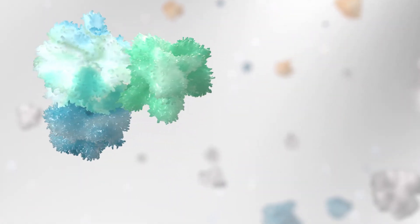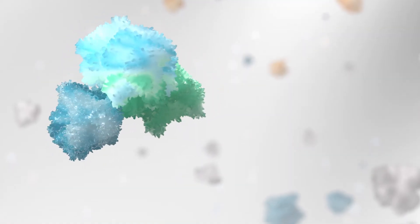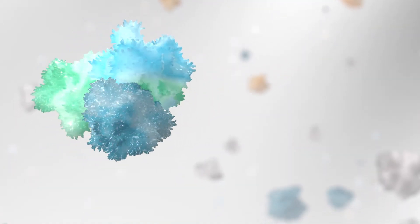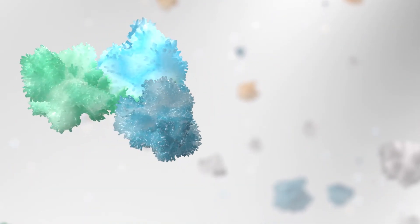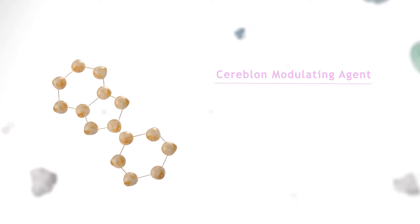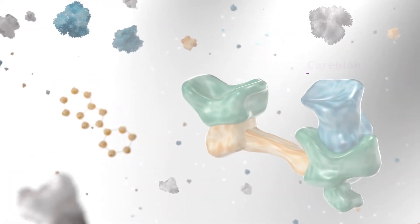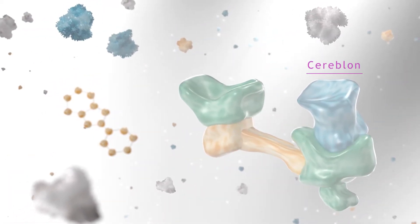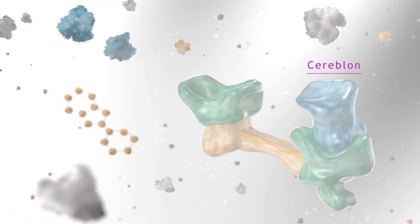By influencing which proteins interact, scientists may be able to impact what happens in the body. Cereblon modulating agents being developed at Bristol-Myers Squibb are one technique scientists use to encourage proteins to interact. These agents act as molecular glue and work by first binding to a pocket on a protein complex surface known as cereblon.